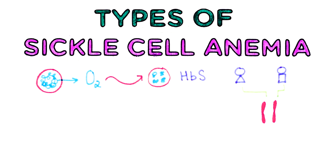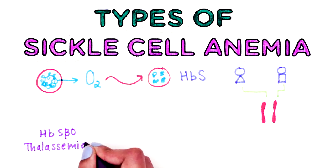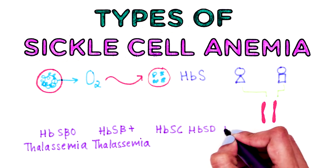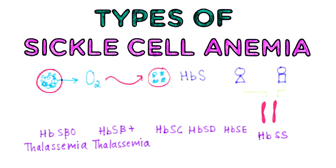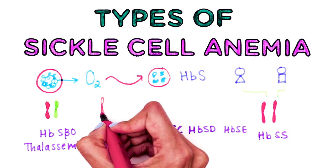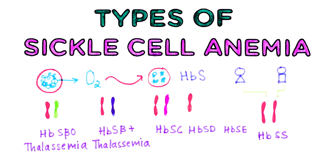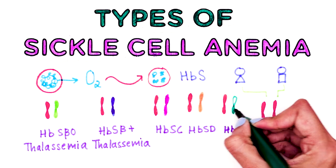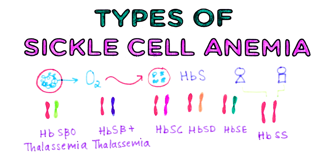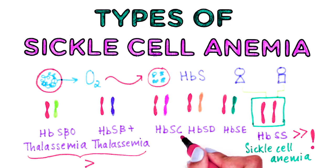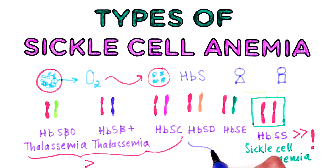The types of sickle cell disease are hemoglobin S beta 0 thalassemia, hemoglobin S beta plus thalassemia, hemoglobin SC, hemoglobin SD, hemoglobin SE, and hemoglobin SS. In all types of sickle cell disease, at least one of the two abnormal genes causes a person's body to make hemoglobin S. When a person has two hemoglobin S genes, the disease is called sickle cell anemia. This is the most common and often most severe type of sickle cell disease. Hemoglobin SC disease and hemoglobin S beta thalassemia are two other common types, while hemoglobin SD and hemoglobin SE are much less common.